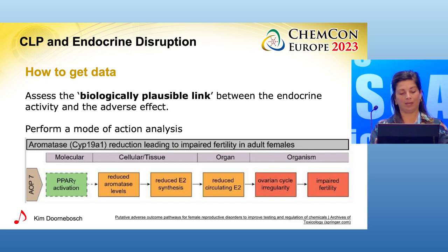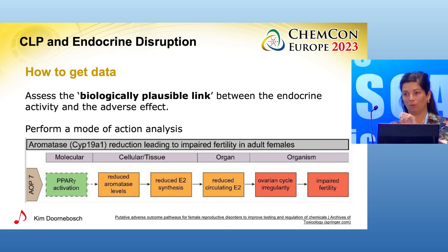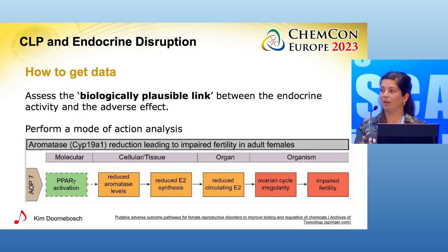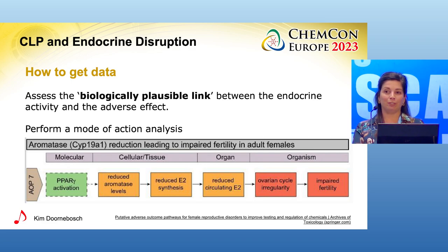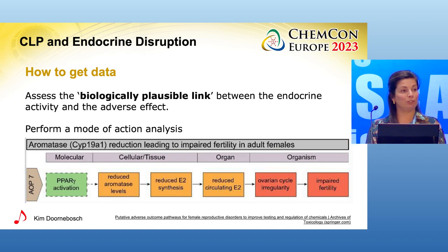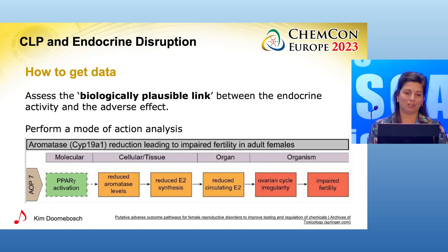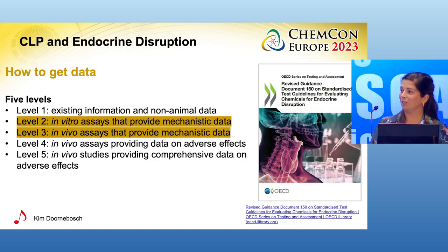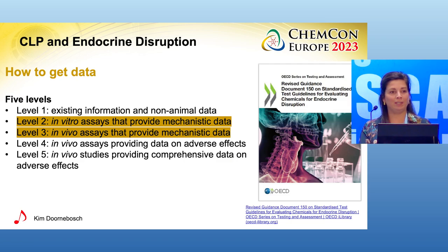For industrial chemicals we don't know the green, which is the activation part. The orange part is the biologically plausible link — you have some activation, you have key events at cellular, tissue, and organ level, and that may lead to an adverse effect. But up to now for classification and labeling, many times the adverse effect on its own was what we were dealing with. This is toxicologically very interesting, but something we do not do as industry by default.